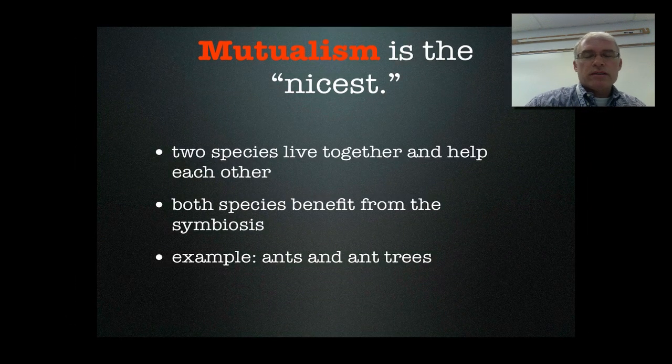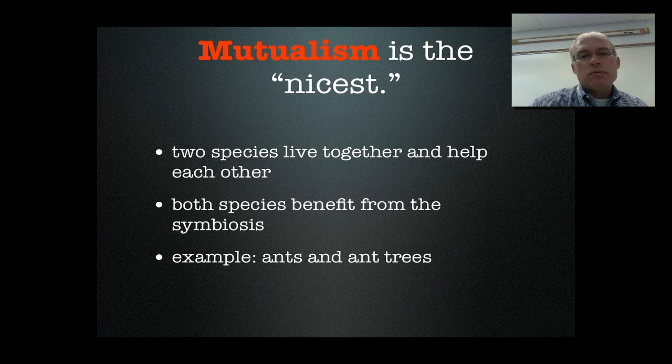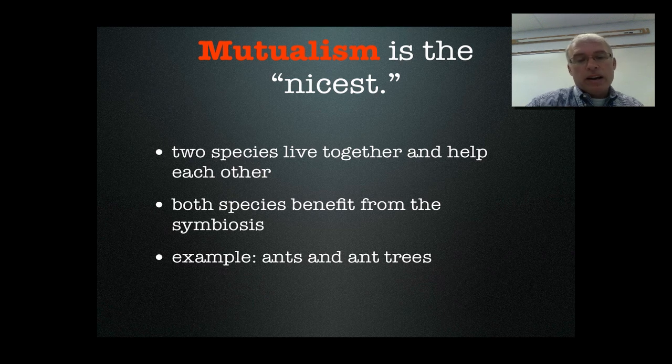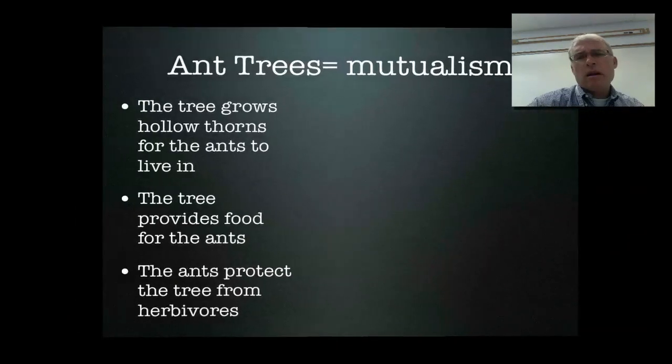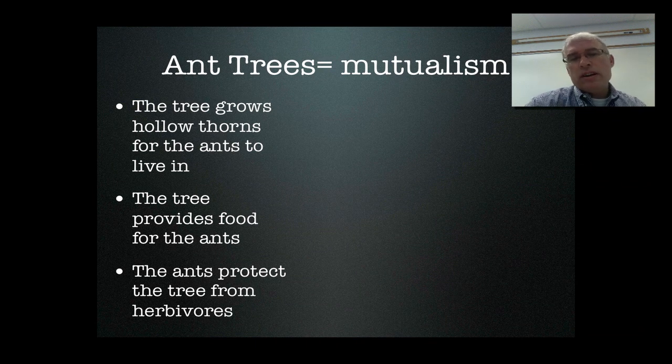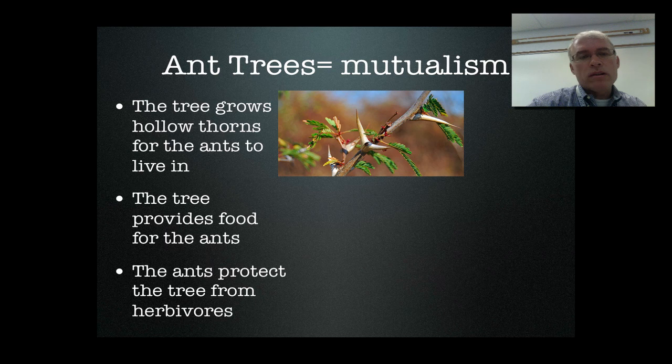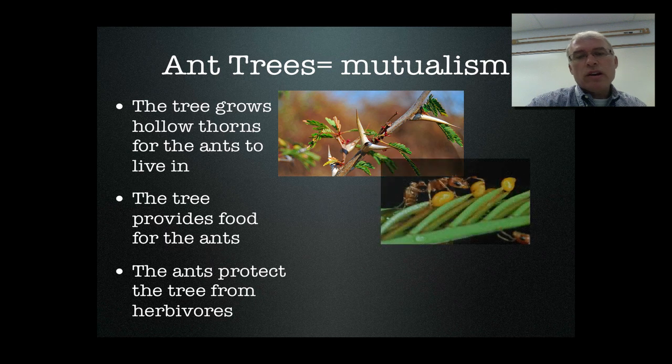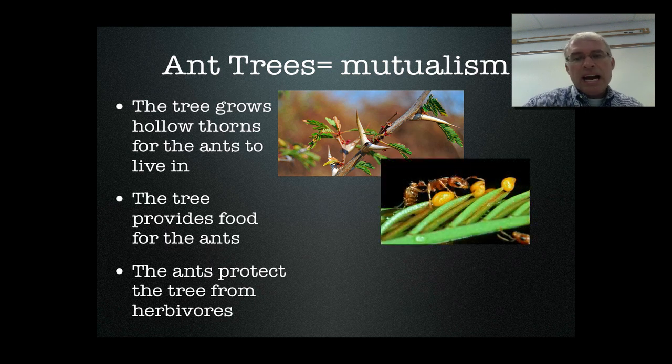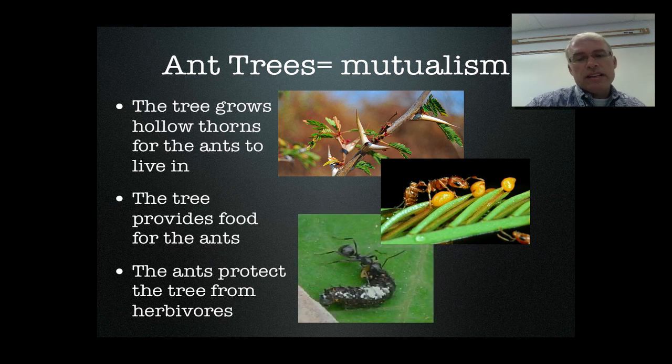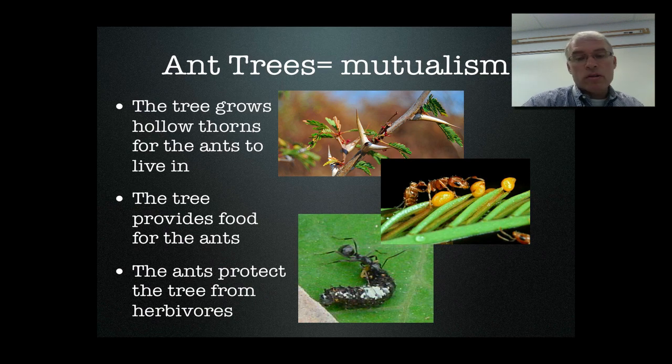Let's start with mutualism. You can think of it as the nicest one. It's when two species live together and help each other. Both species benefit from the symbiosis. An example is ants and ant trees. An ant tree grows hollow thorns that ants can live inside of. The tree also produces, at the tips of its leaves, little packets of food for the ants. In exchange for the food and shelter, the ants protect the trees from herbivores like caterpillars.